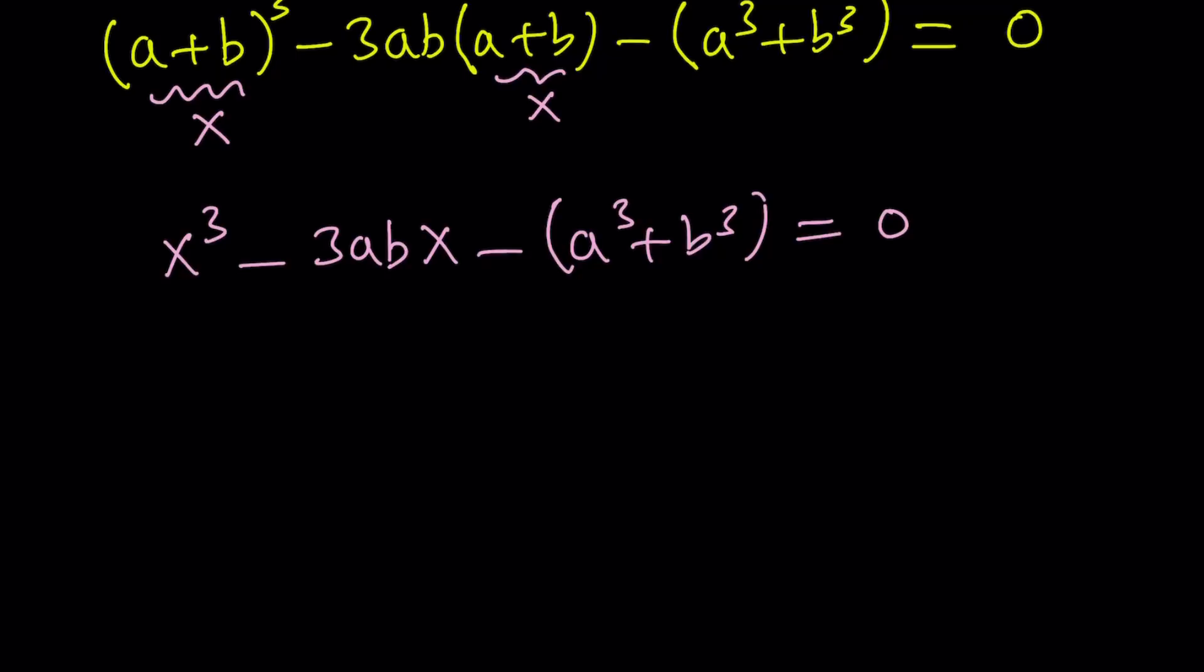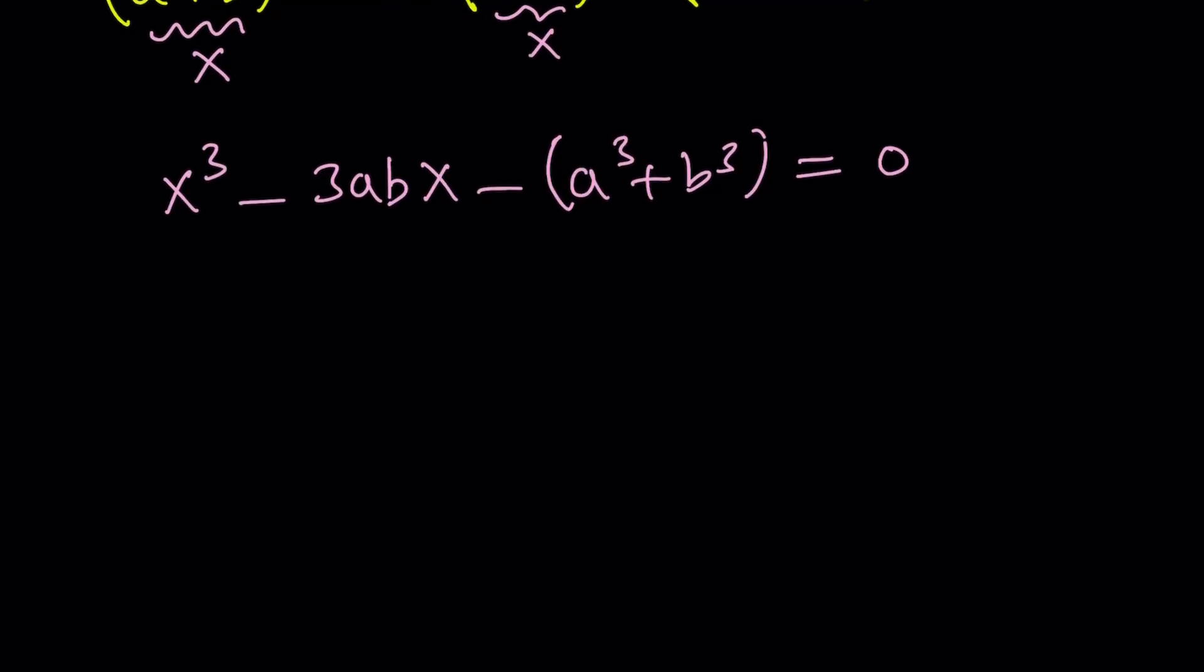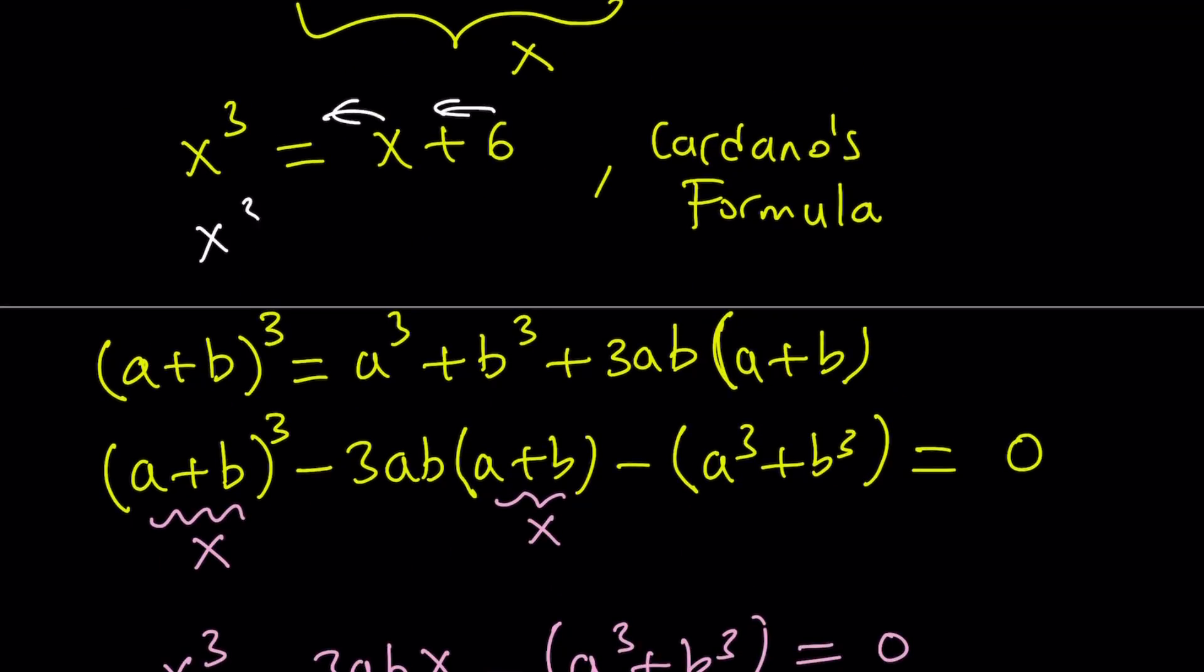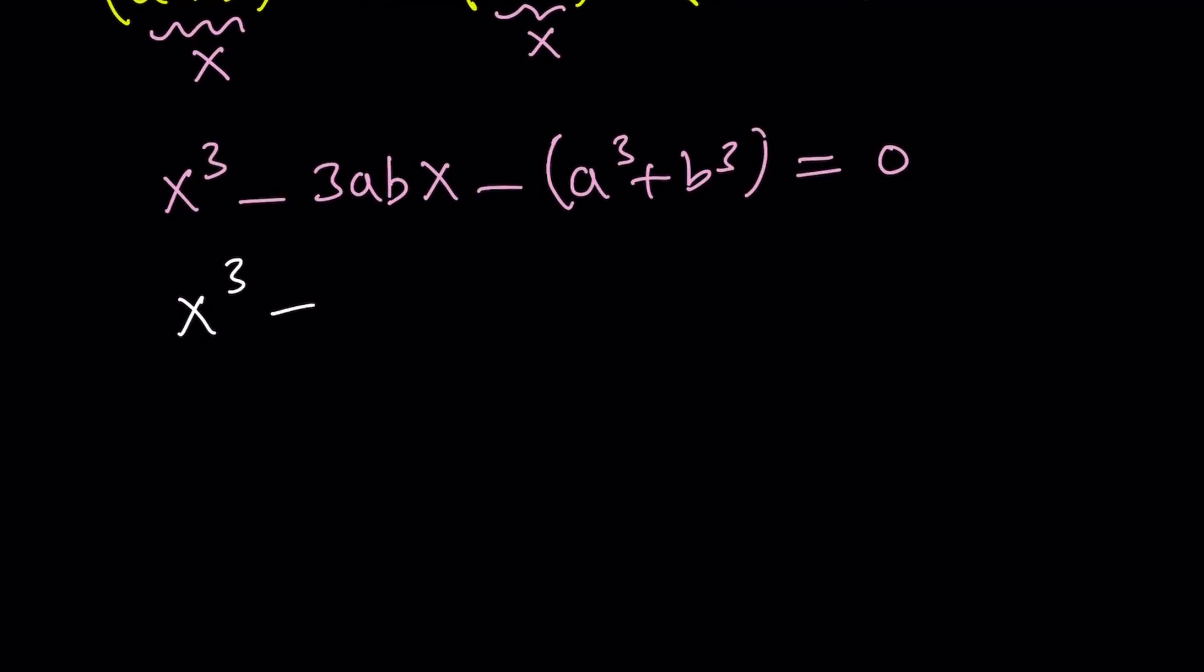And that gives us an interesting equation: x³ minus 3abx minus the quantity a³ plus b³ equals 0. Now, this is a cubic equation in x. Obviously, one of the solutions of this cubic is a plus b, because we said that x equals a plus b. What about the other solutions? Can you find them? That's something to think about. Now, this is my cubic, but we were given something else. What were we given? We were given x³, and obviously, if you put everything on the same side here, you're going to get x³ minus x minus 6 equals 0. So that's my cubic.